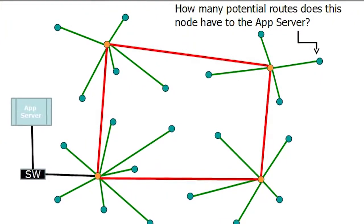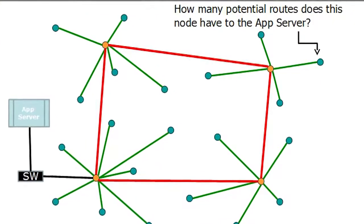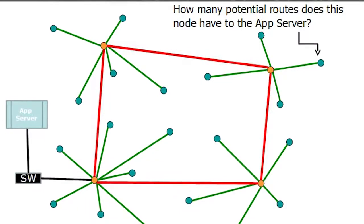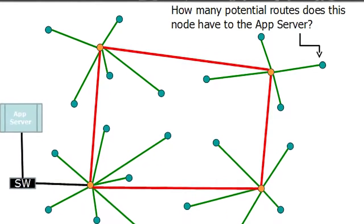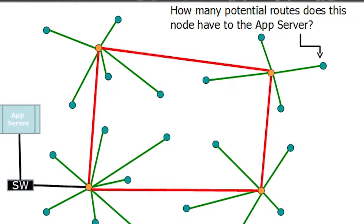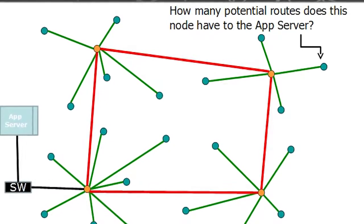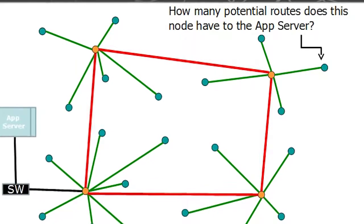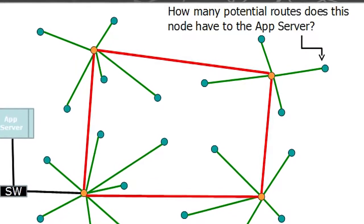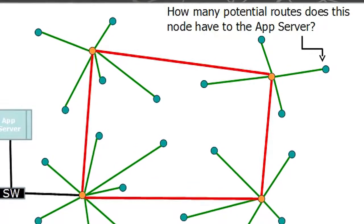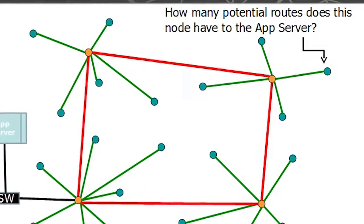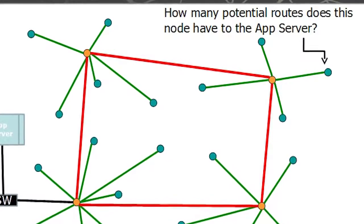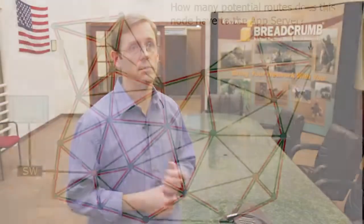Going back to the traditional wireless network architecture, consider the mobile node in the upper right corner. How many potential routes does that node have to the application server on the left side of the screen? By the way, below that application server is just an Ethernet switch represented by that SW box. As you can see, that mobile node only has two paths back to the application server. First, the data has to travel to its local infrastructure node. Then it has to travel either clockwise or counterclockwise to get to the exit node, pass through the switch, and reach the application server.